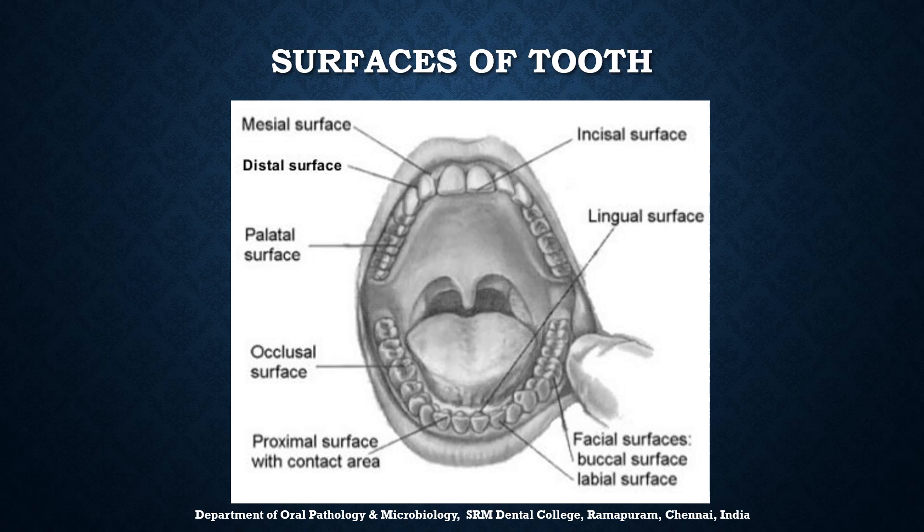The surfaces are named according to their positions. In the incisors and canines the surfaces towards the lips are called labial surfaces, and in the premolars and molars the surface facing the cheek or the buccal mucosa is called the buccal surface. When the labial and buccal surfaces are collectively referred to, they are called facial surfaces. All surfaces facing towards the tongue are called lingual surfaces and the surface facing the palate is called the palatal surface.